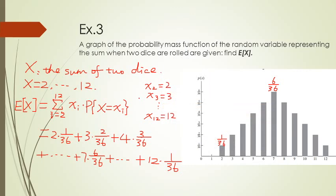That covers all the lectures for the first eight weeks on expected values. This is a short section in the textbook. When we later study more distributions — discrete and continuous, including the normal distribution — we will also discuss expectation and variance. Expectation and variance are two basic and important measurements used to characterize any discrete or continuous distribution.